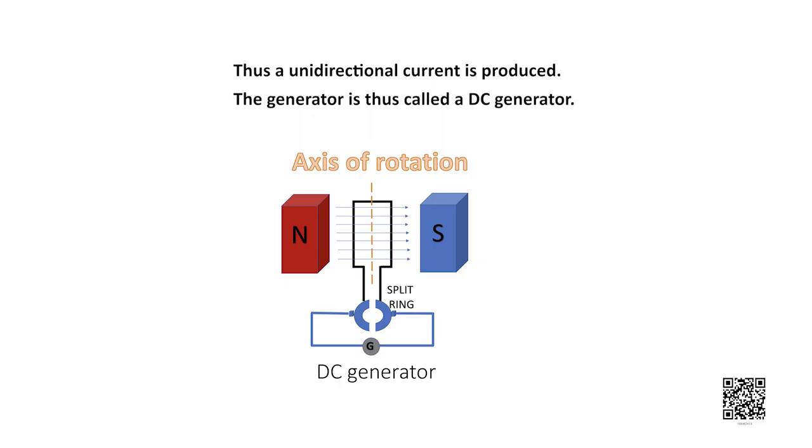To get a direct current DC which does not change its direction with time, a split ring commutator is used. Thus a unidirectional current is produced and the generator which produces the unidirectional current is called the DC generator.